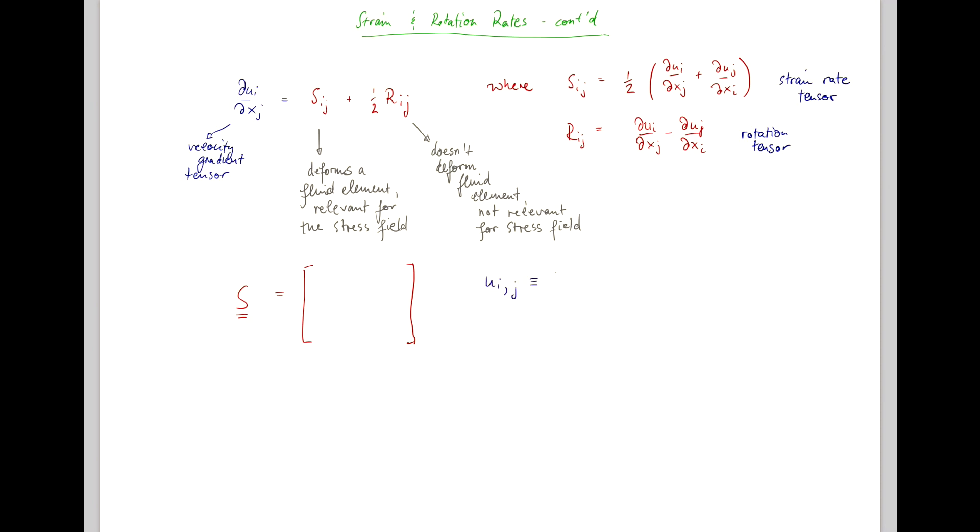is equivalent to the partial derivative of ui in the j direction. And so if we consider the matrix corresponding to the strain rate tensor,